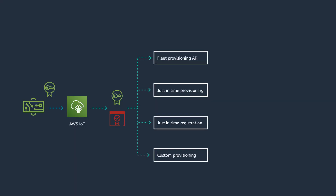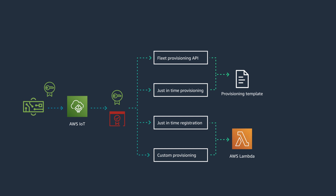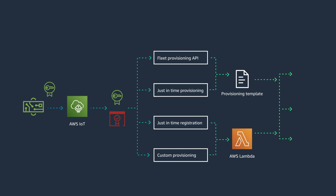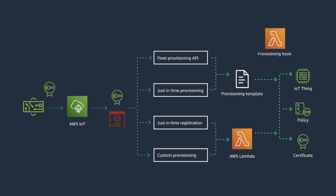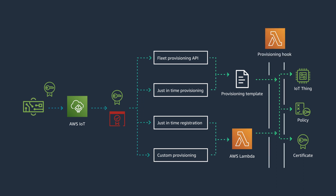Regardless of which method, the objective of a provisioning flow is to establish trust and create cloud resources that represent the IoT device. Those resources are created based on a provisioning template. At the end of provisioning flows, you have a registered device certificate, an IoT thing registry, and an IoT policy. Additionally, the provisioning flow can be used as a mechanism for an event-driven cloud infrastructure, as AWS IoT Core is integrated with many other AWS services.